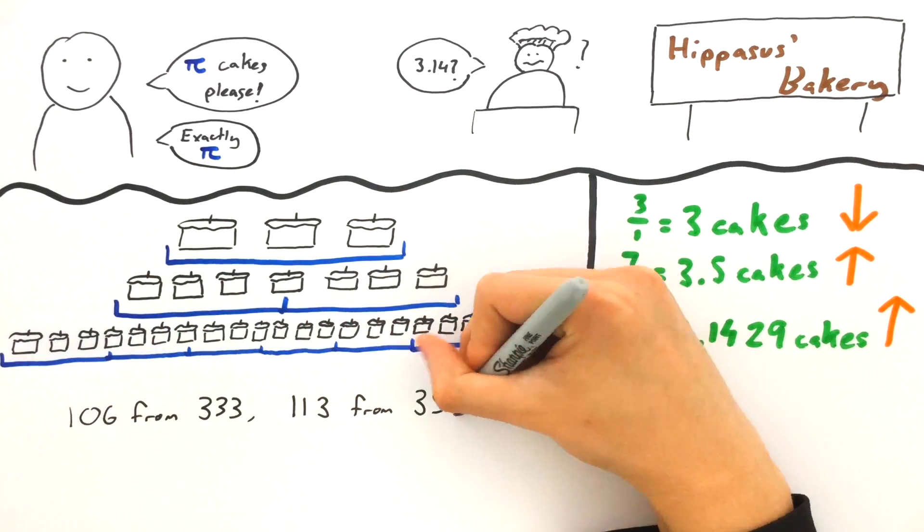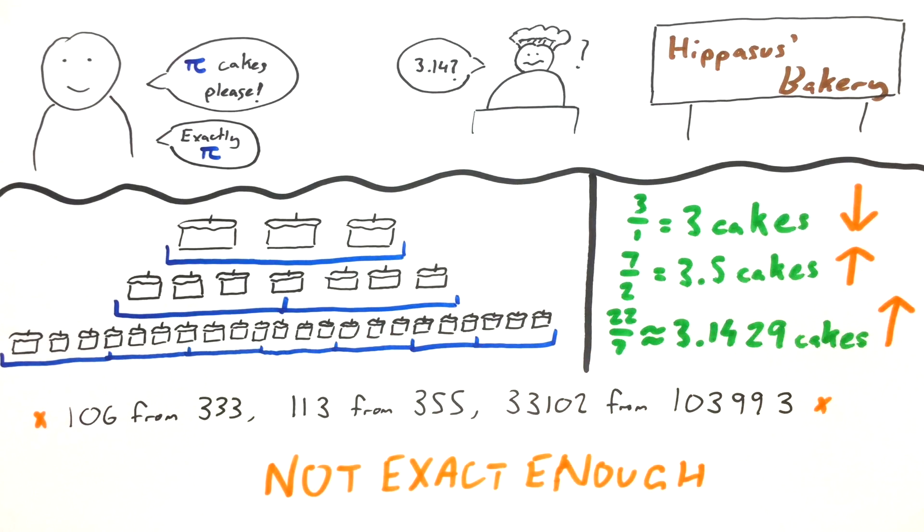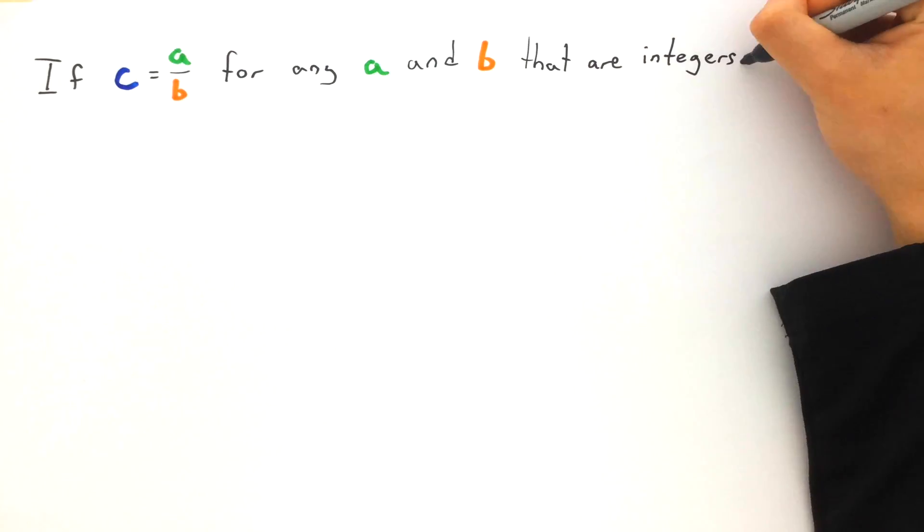The baker can keep trying with different amounts of cuts from different amounts of cakes, but he'll never get me exactly pi cakes. If some number c is equal to a over b, for any a and b that are integers, then c is called rational.